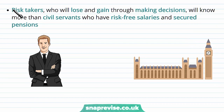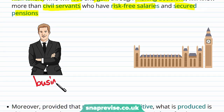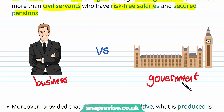Why do we believe this? We think about risk-takers — our businessmen and businesswomen who lose and gain through making decisions. Because they can lose via a decision they make, we might expect them to know more than civil servants within the government who have risk-free salaries and secure pensions. Business people operating within the market have differences of opinion to the government as to how the market actually is, and they have more information because they operate quite intimately within their industry.